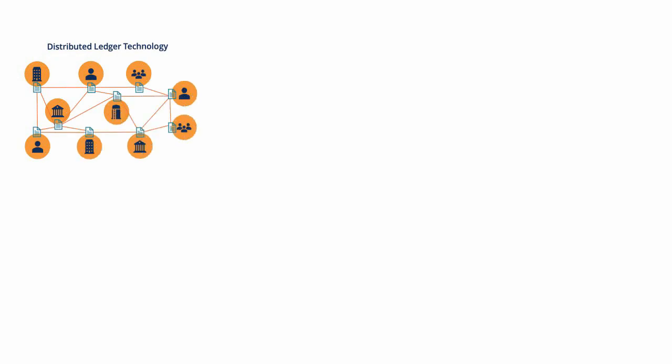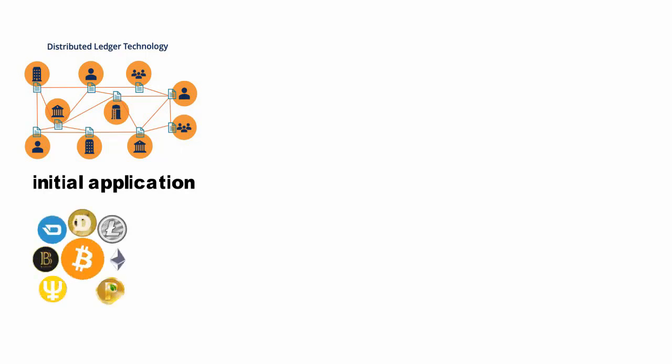What is distributed ledger technology, or DLT? This technology's initial application in blockchain started with Bitcoin, where it's used to record transactions and ensure their validity. Distributed ledger technology is the system behind the popular buzzword 'blockchain.'